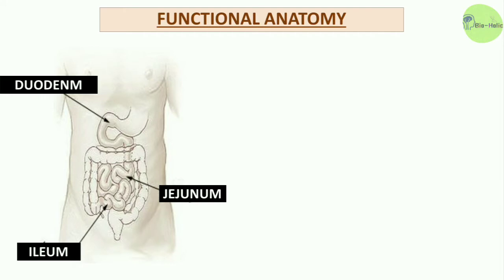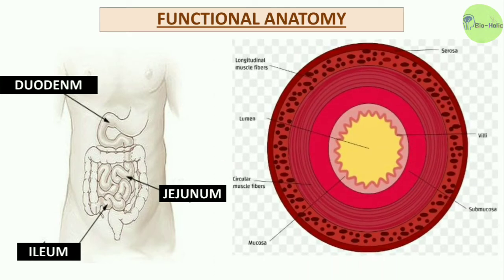The ampulla of Vater opens on the posteromedial wall of the descending part of the duodenum. The second part is the jejunum and the third is the ileum. These form respectively the proximal two-fifths and distal three-fifths of the remaining small intestine. There is no sharp demarcation between the jejunum and ileum. Histologically, the wall of the small intestine is made up of four layers: mucosa, submucosa, muscle coat, and serosa.